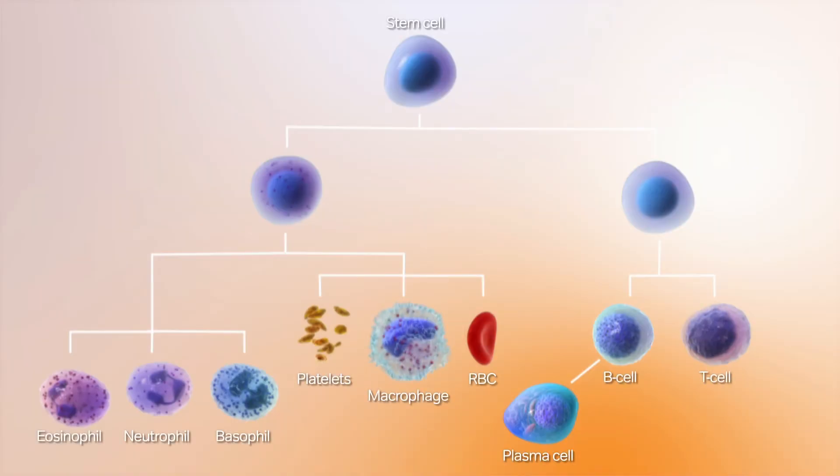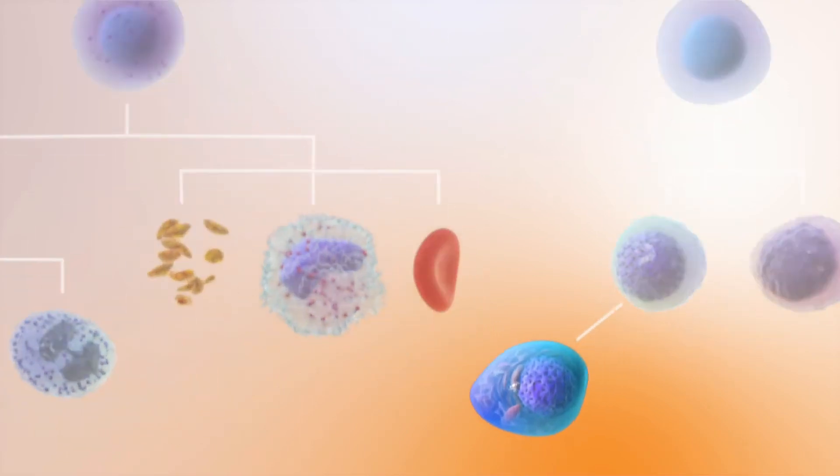White blood cells form an important part of the immune system. Different types work together to seek out and destroy germs that invade the body.